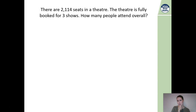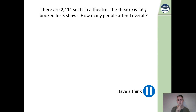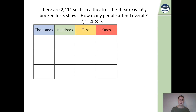Now let's consider this question: there are 2,114 seats in a theatre, and the theatre is fully booked for 3 shows. How many people attend overall? Pause the video and have a think — what calculation do you think you'll need to do? We will need to do the sum 2,114 multiplied by 3.